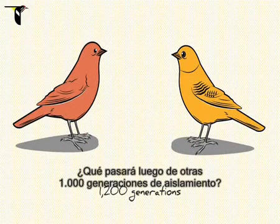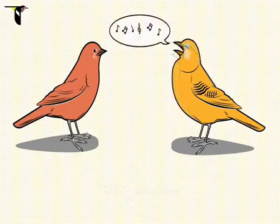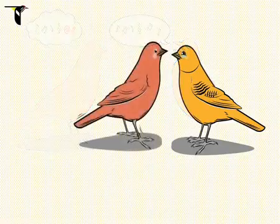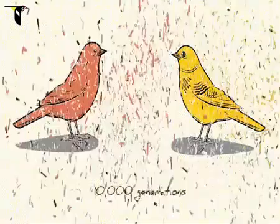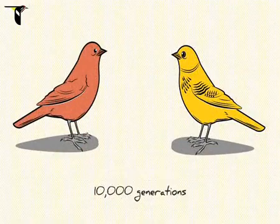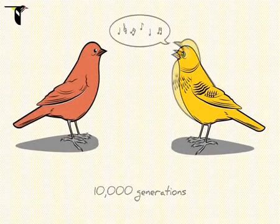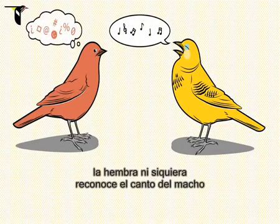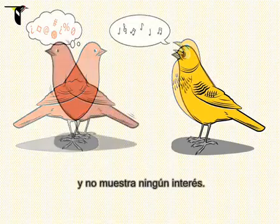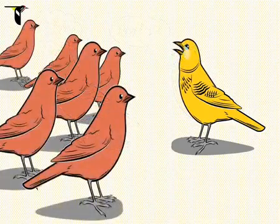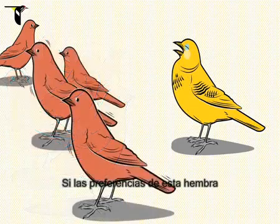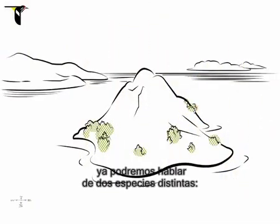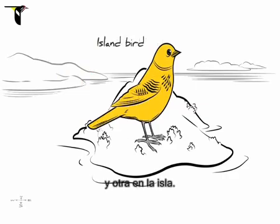How about after another 1,000 generations of isolation? Now, the female finds this island male's song a bit strange, but she still chooses to mate with him. What if we fast-forward again to 10,000 generations of isolation? This time, the female doesn't even recognize the male's song and is completely uninterested. If this female's mating preferences are widespread in the population, we now have two bona fide species: mainland and island.